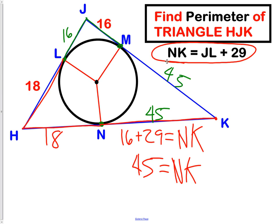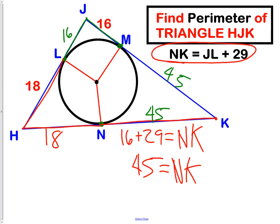To find the perimeter of the triangle, we now just add up all of the pieces around the triangle. We have an 18, an 18, two 16s, and two 45s. If you add those all together, you should get 158. So we have a perimeter of 158 units.